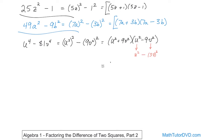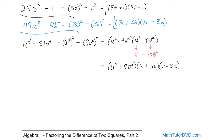So I can rewrite this to be even simpler. The final answer is really going to be u squared plus 9v squared, and then it's going to be u plus 3v, u minus 3v. Because when you apply the rule, it's the base part plus the second base, and then this base minus the second base. That's what the rule has been all along. So it's u plus 3v, u minus 3v, and then you have the u squared plus 9v squared.